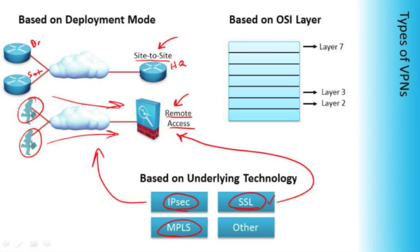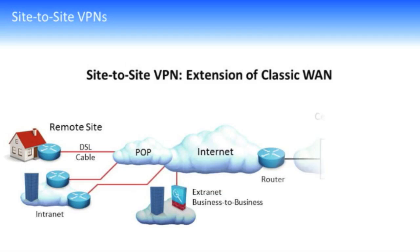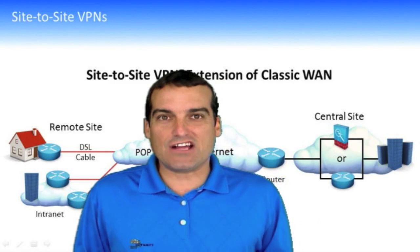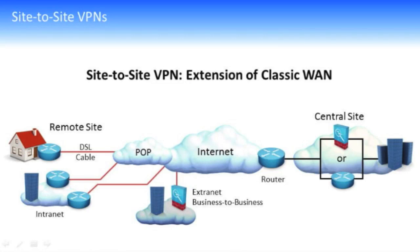There are other technologies like MPLS that are based on different layers of the OSI model that we can implement, so there are lots of virtual networking technologies. Many of them, like IPSec and SSL, are considered virtual private network technologies because they help secure the infrastructure. There are other ones that fit into various layers of the architecture that we won't talk about, like PPTP or L2TP. This is a vast area of discussion, but here at the associate level in IINS, we'll keep the scope fairly constrained.